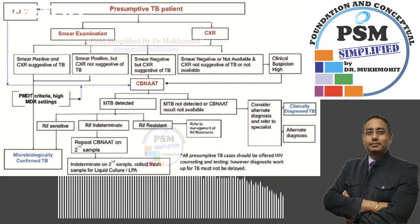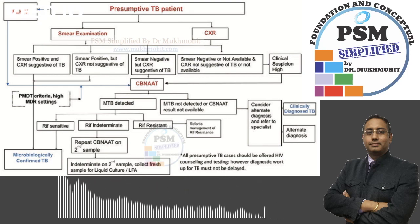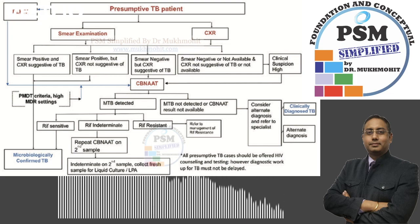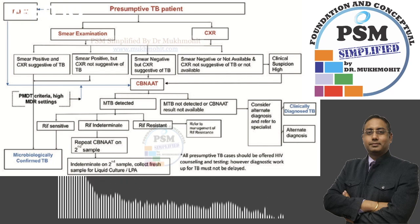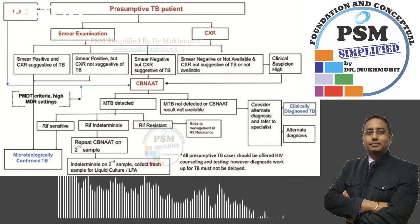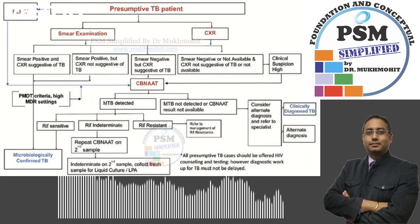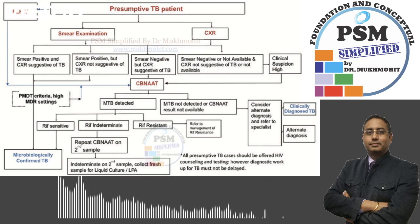At the CB-NAAT stage, two sputum samples are collected and sent to the CB-NAAT site. One specimen is tested using the CB-NAAT, and if TB is detected, the other sample is used for further cascade testing. If the CB-NAAT result is Mycobacterium tuberculosis detected, the second sample needs to be transported to the culture and drug sensitivity lab immediately.